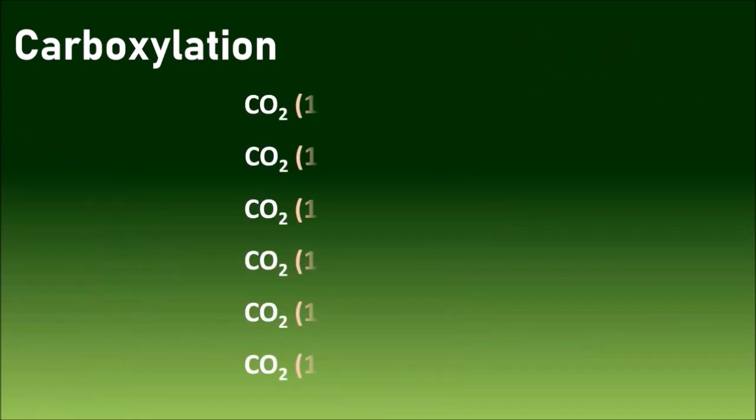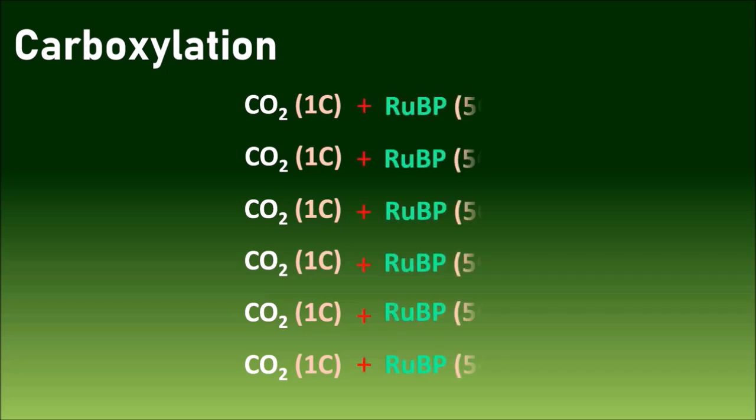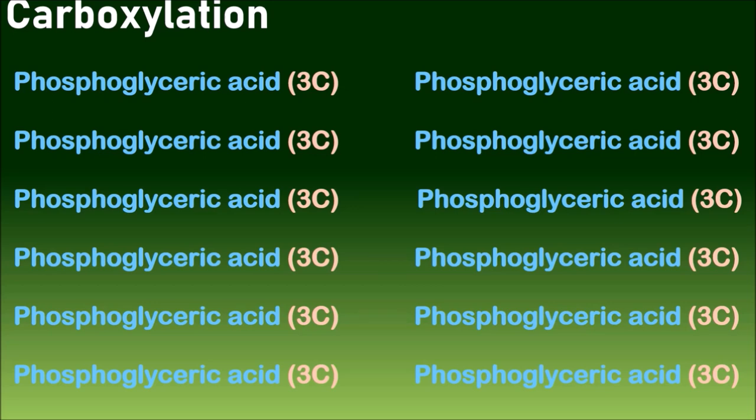In this process, six carbon dioxide molecules containing one carbon atom each will combine with ribulose 1,5-bisphosphate molecules which contain five carbon atoms. Totally they make about thirty-six carbon atoms. This results in the formation of twelve molecules of phosphoglyceric acid which contain three carbon atoms each, totally they make about thirty-six carbon atoms.